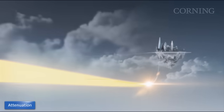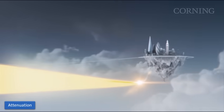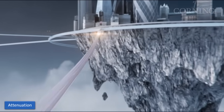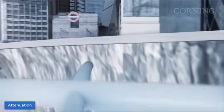Attenuation refers to signal loss along the length of the fiber. In this illustration, the light gets dimmer as it travels down the fiber. It can be caused by the quality of the glass itself, or can be induced by bending.